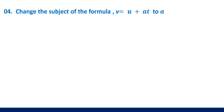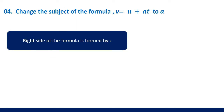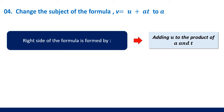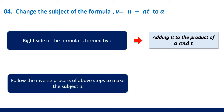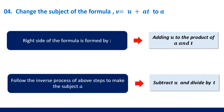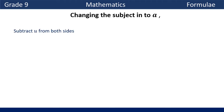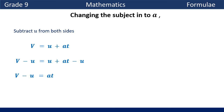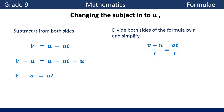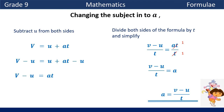Next example: change the subject of the formula V equals U plus AT to A. The right side is formed by adding U to the product of A and T. Following the inverse process — subtract U and divide by T. Subtracting U from both sides gives V minus U equals AT. Then dividing both sides by T, we have A equals (V minus U) over T.